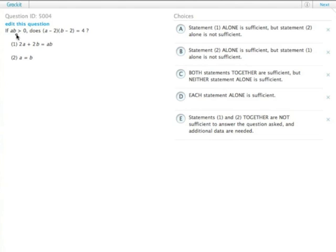Okay, so if a times b is greater than 0, and all that tells us is that neither of them is 0, does the quantity a minus 2 times the quantity b minus 2 equal 4?